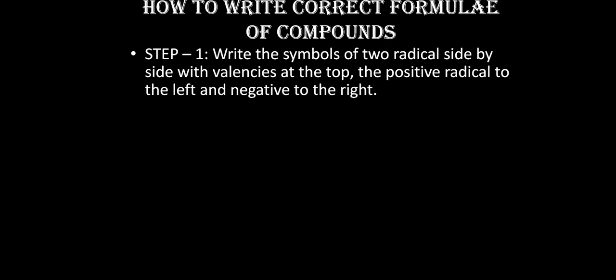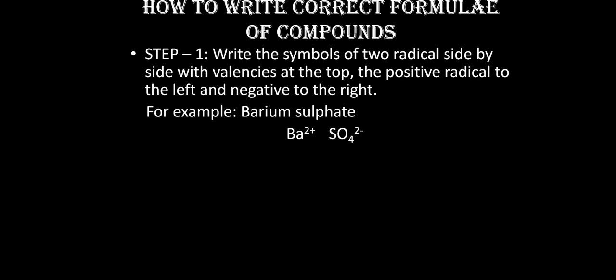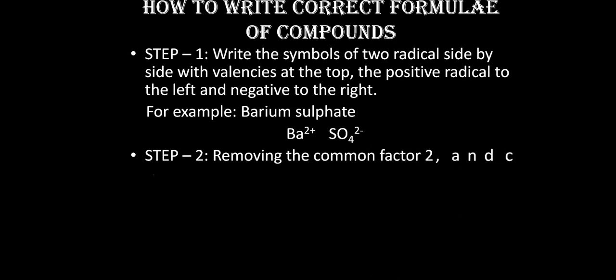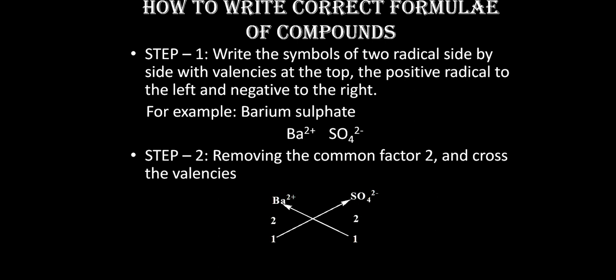There are two steps in writing a formula. First, write the two radicals — the acid and the basic. The positive radical is written on the left and the negative radical on the right. For example, barium sulfate: Ba²⁺ on the left, SO₄²⁻ on the right. Second, check for a common factor in the charges — here both are 2, so take 2 as common, leaving 1 for each. The formula is written without charges: BaSO₄.